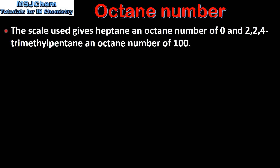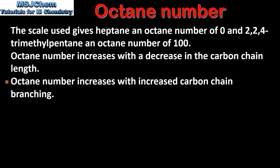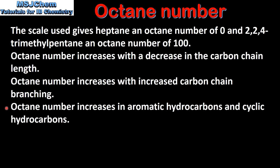Let's end with a summary. The scale used for octane number gives heptane an octane number of 0 and 2,2,4-trimethylpentane an octane number of 100. The octane number increases with a decrease in carbon chain length, meaning that shorter chain hydrocarbons have a higher octane number. The octane number also increases with increased carbon chain branching, meaning that branched hydrocarbons have a higher octane number than straight chain hydrocarbons. The octane number also increases in aromatic hydrocarbons and cyclic hydrocarbons.